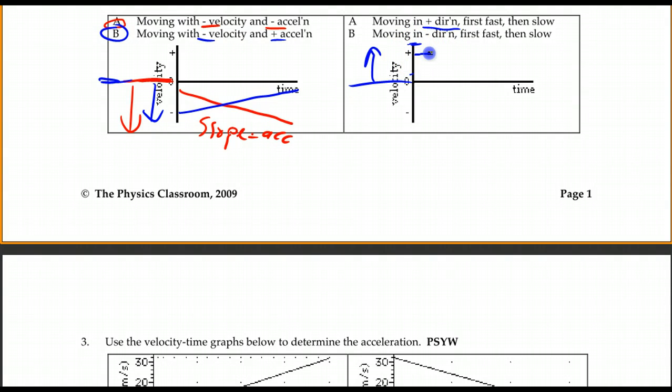I'm going to say at first, we're moving with a fast constant velocity, and then something causes us to change to a slower constant velocity. Faster will be higher on the numbers, and slower would be closer to zero. That's A.